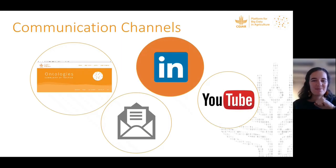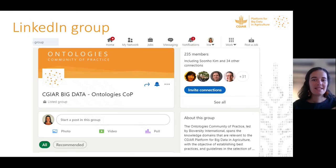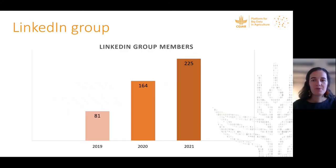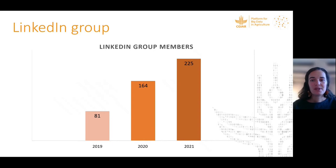Subscriptions to the newsletter have grown through the years, from 94 people in 2017 to 479 people today. For people deeply interested in ontology, there is a LinkedIn group — a forum for members to meet, exchange, and share news and events. The group was created in 2019 following requests from members to know each other and be able to get in touch and share information.